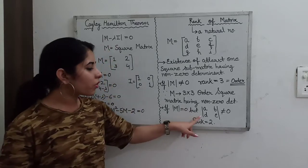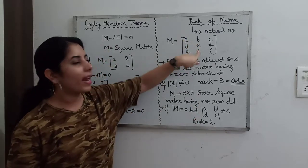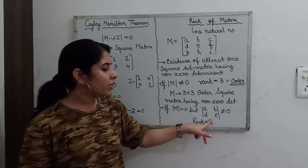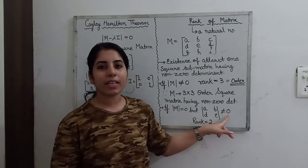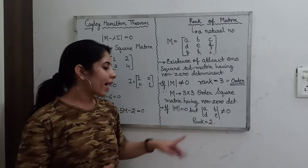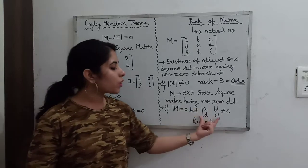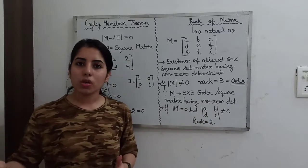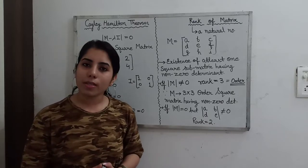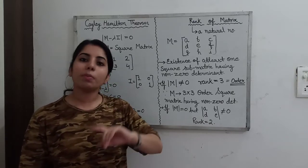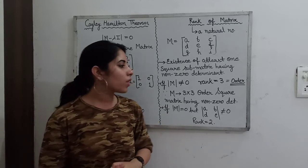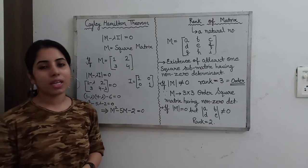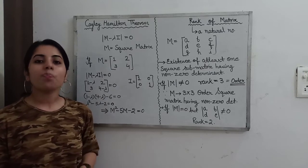If we consider only a 2×2 sub-matrix and its determinant is non-zero, then the rank will be equal to two. So the rank depends on the order of the square sub-matrix we are considering — specifically, the largest order possible for which you get a non-zero determinant. That largest order is known as the rank of the given matrix. I hope the things are clear, but if you have any doubt, you can comment below. If you like the video, like it and share it with your friends.